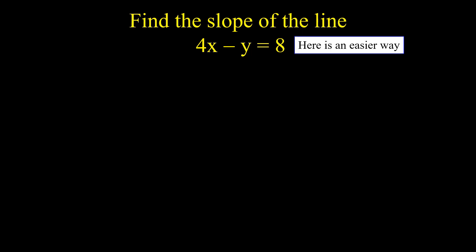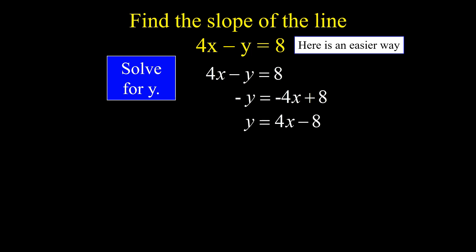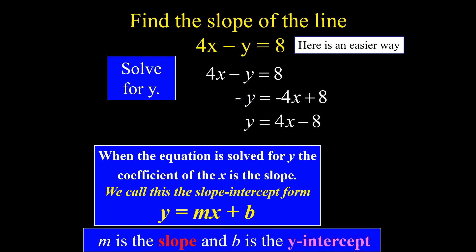Now let us find the slope of the line 4x minus y equals 8 using an easier way. Solve for y: isolate the y term. Negative y equals negative 4x plus 8, so y equals 4x minus 8. When the equation is solved for y, the coefficient of x is the slope. We call this the slope-intercept form: y equals mx plus b, where m is the slope and b is the y-intercept. Therefore, m is equal to 4 and the y-intercept b is equal to negative 8.